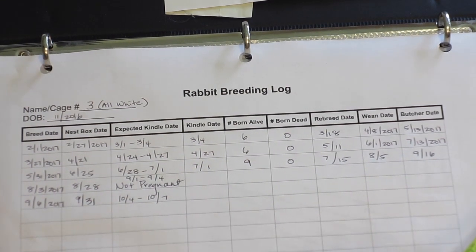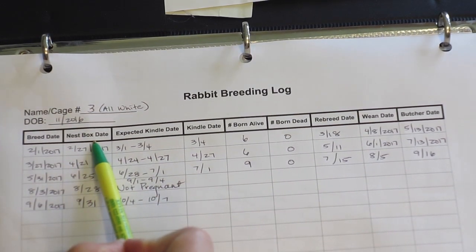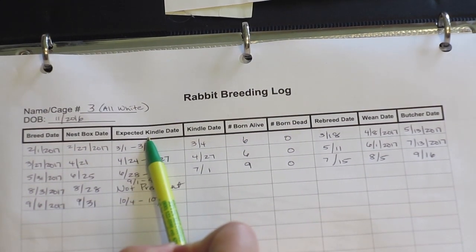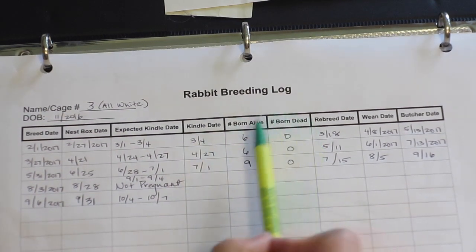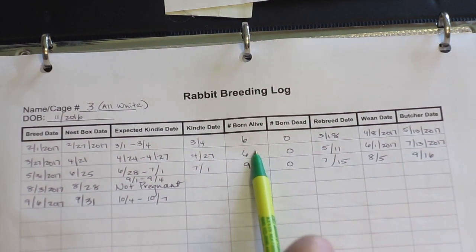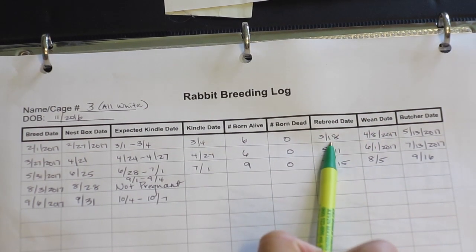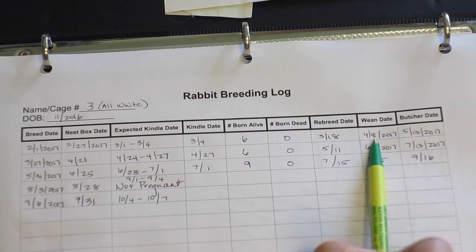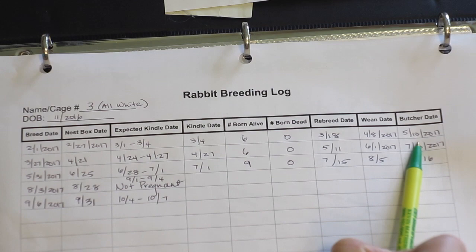In this handwritten spreadsheet, I can keep track of the breeding date, the nesting box date that I need to give her a nesting box, when she's expected to have her babies — which in rabbit keeping is called a Kindle — and her actual Kindle date, the number of babies born alive, the numbers born dead, when I need to re-breed her, the date I need to wean her babies, and the date those babies are to be butchered.